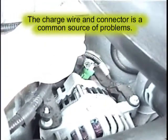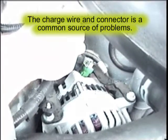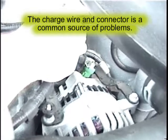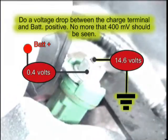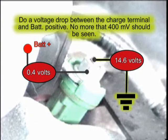Again, a loose belt causes low alternator output and a discharged battery. A voltage drop test between the alternator charge terminal and battery positive should be done to check for high resistance. If more than 400 millivolts is present, then there is a problem.